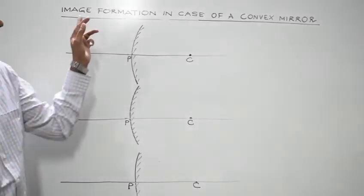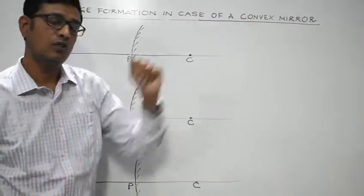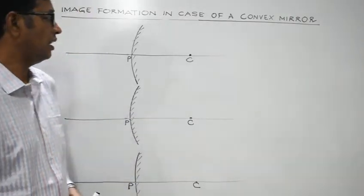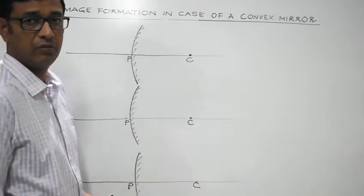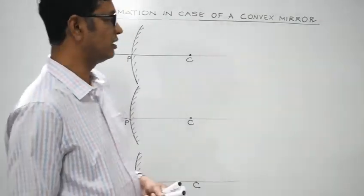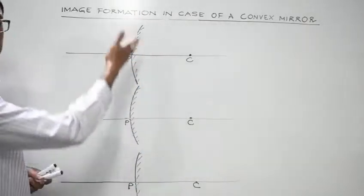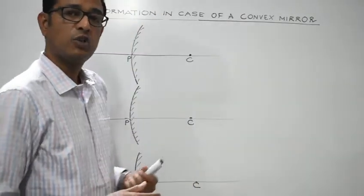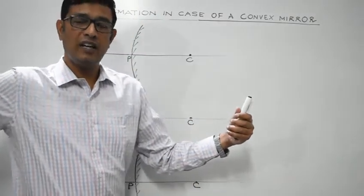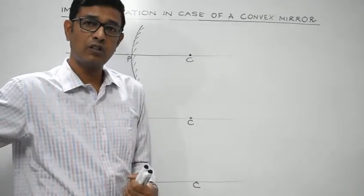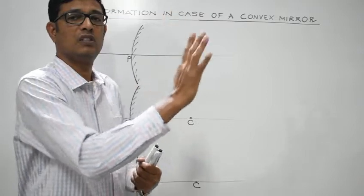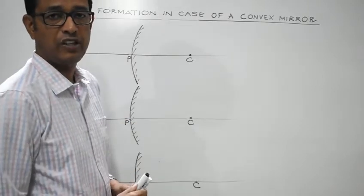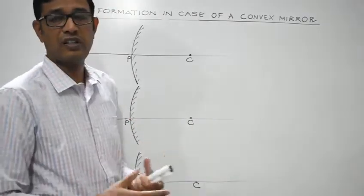In this lecture we will discuss image formation in the case of a convex mirror. Unlike a concave mirror which had seven different cases, here we will consider only three cases. We will start with the object placed at a very far distance, say at infinity, and then bring it systematically closer and closer, observing how the nature, position, and size of the image change.